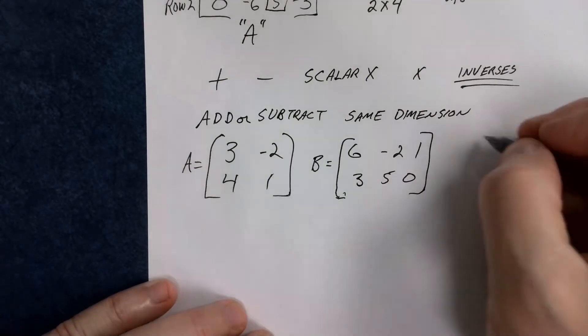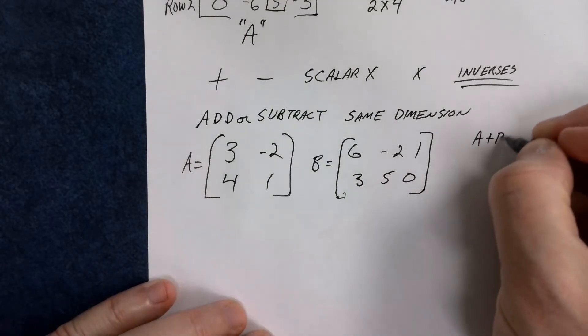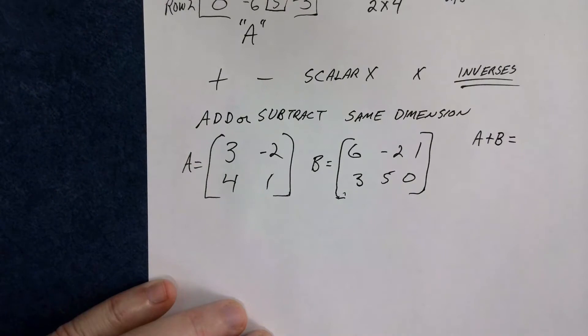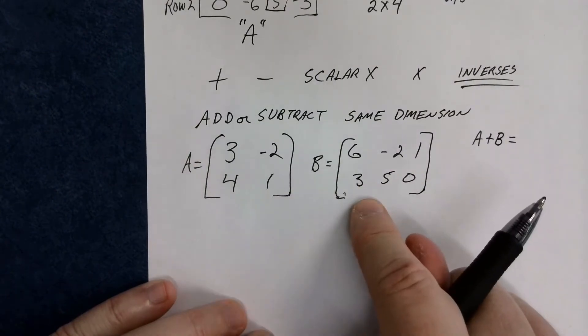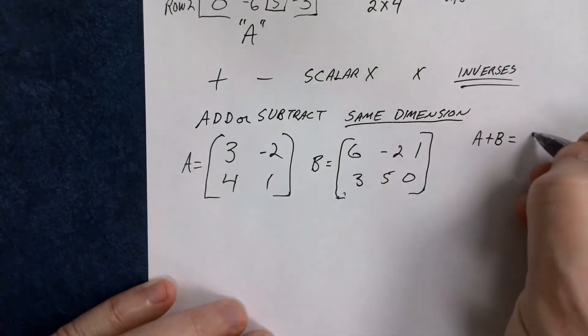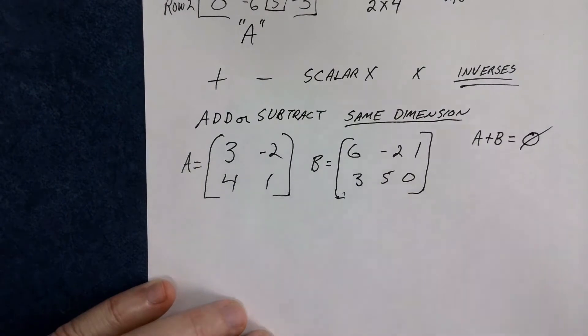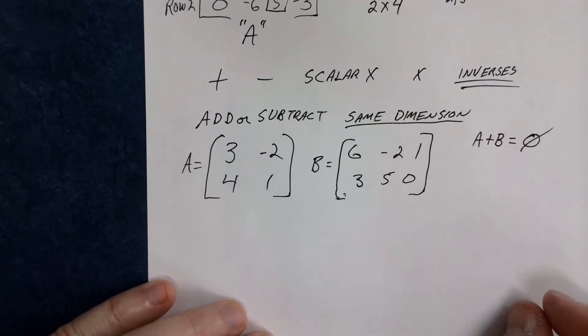So if I add A: 3, negative 2, 4, 1, like this, we'll call this one A. B is a 6, negative 2, 1, 3, 5, 0. You can have 0 in here. At this point in time, if I said, what is A plus B equal to? It would be like, well, A is a 2 by 2, and B is a 2 by 3. Since they have to have the same dimension, this would be no solution.